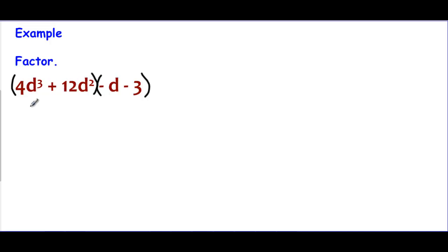So I would look at this first group and say I see a four in common, and I see two Ds because, again, I run out of Ds there, so just the two. And then I'm going to rebuild this, and it looks like it's going to turn into D plus three.